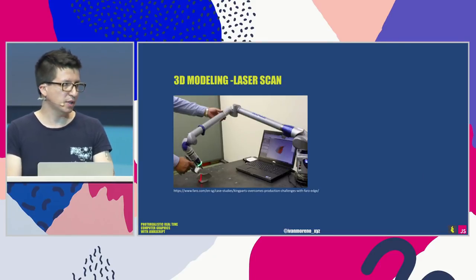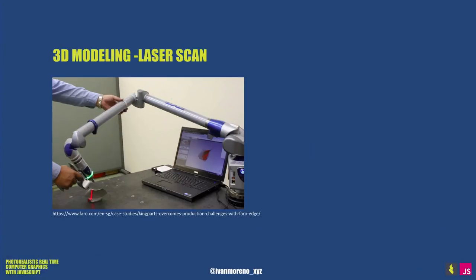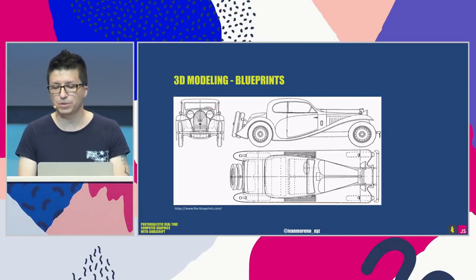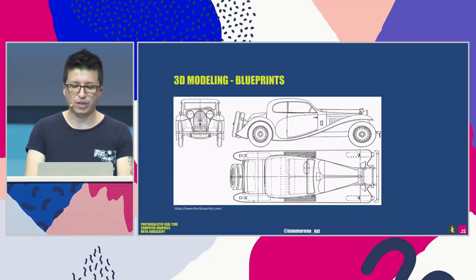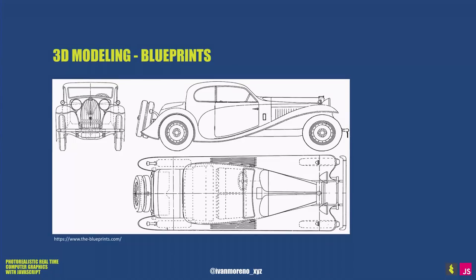Another method is direct laser scanning, which is great for reverse engineering and very useful for creating cars or other objects in industrial production. The most classical method is volumetric topographic modeling from blueprints: it's precise and produces less data noise, but it takes a lot of time to optimise, so it's not cost-effective compared with the other two methods.